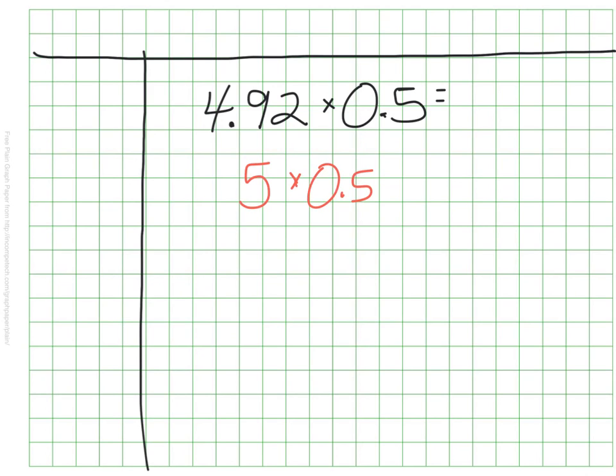This is telling me to multiply 5 by one half. That gives me an estimate. Half of 5 would be 2.5. So my estimate here is 2.5.